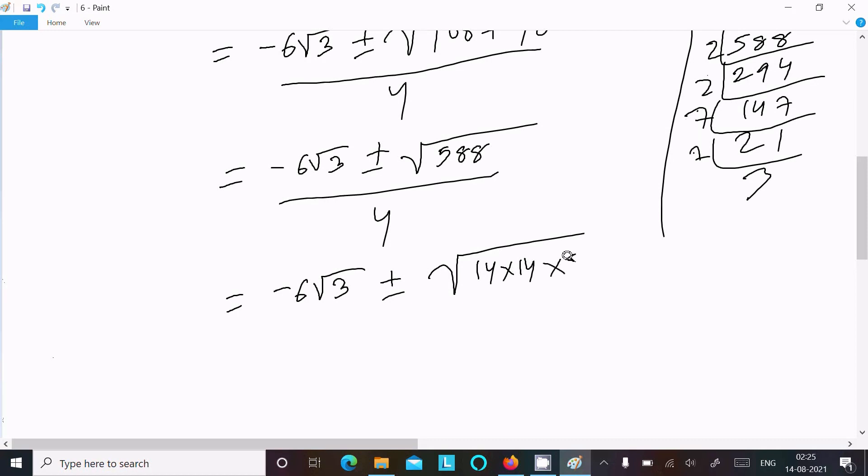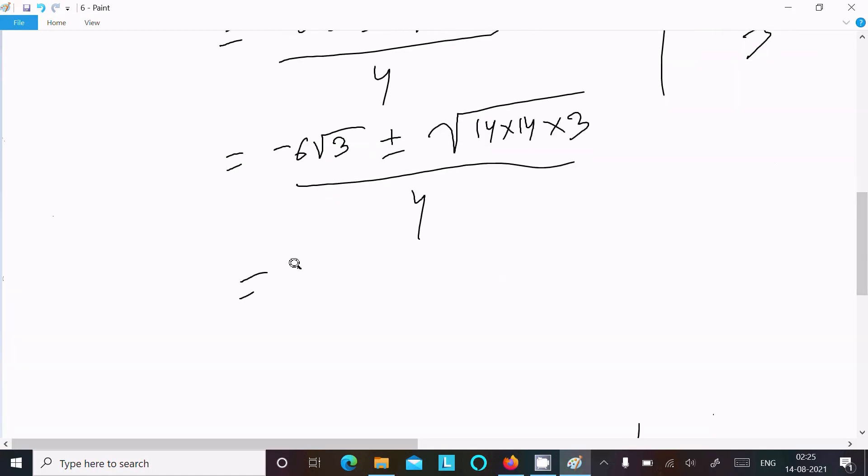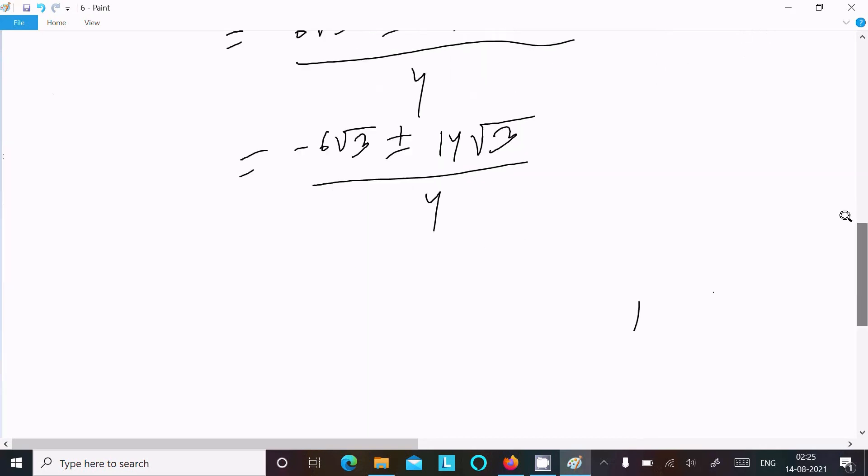Wait, let me recalculate: √588 = √(4 × 147) = 2√147 = 2 × 7√3 = 14√3. So we write here, divided by 4: (-6√3 ± 14√3) / 4. So this is the value of x. Now x has 2 values.